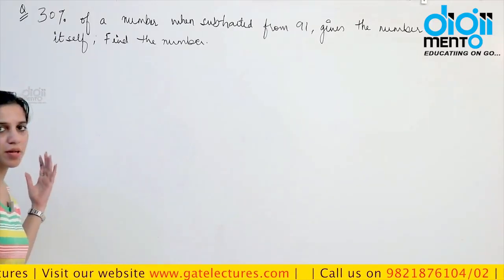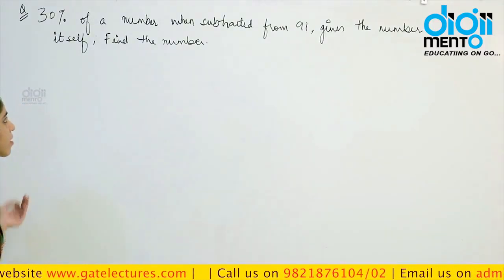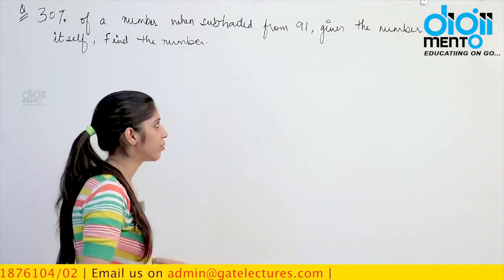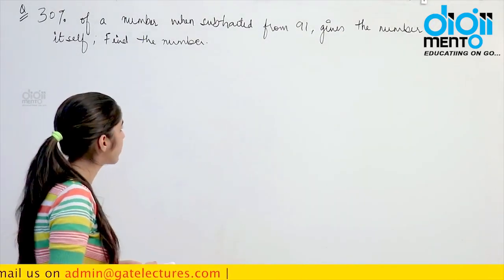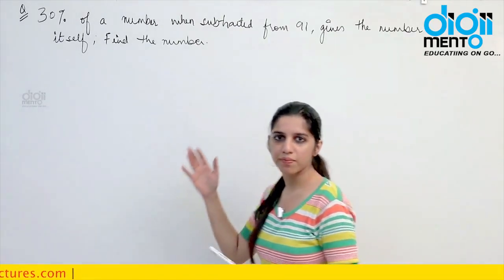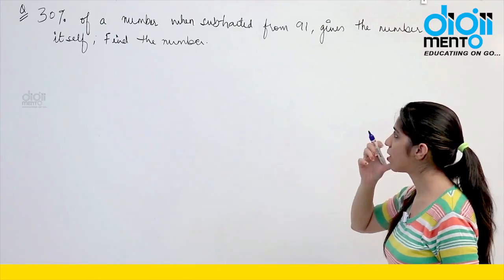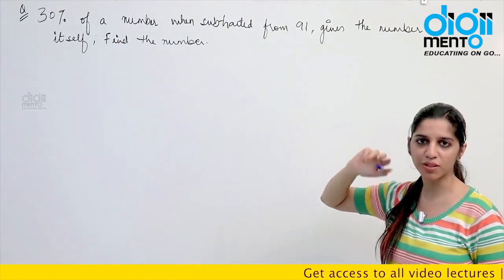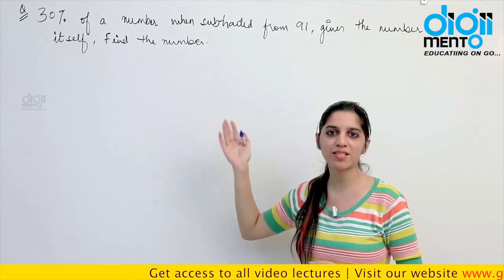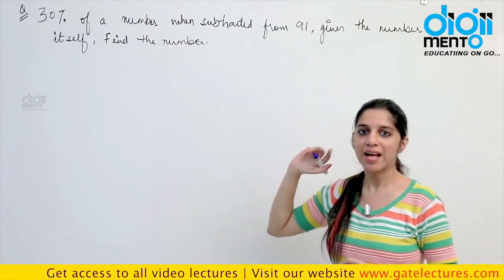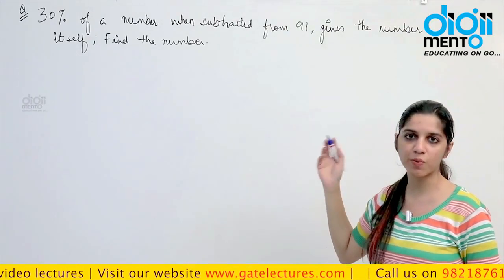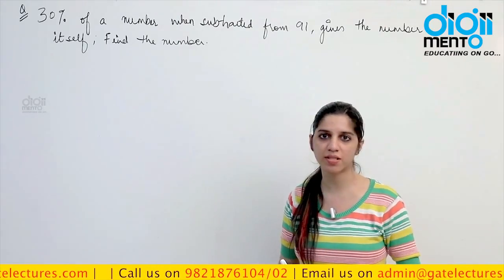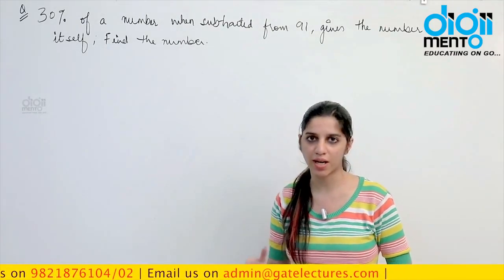Look at this question: 30% of a number when subtracted from 91 gives the number itself. Find the number. These are basically very easy questions. Here you cannot assume the number to be 100 because they are asking you for the number itself — you can only assume 100 when the answer is required in percentages. So assume the number to be X.